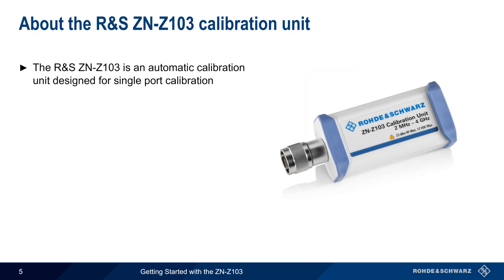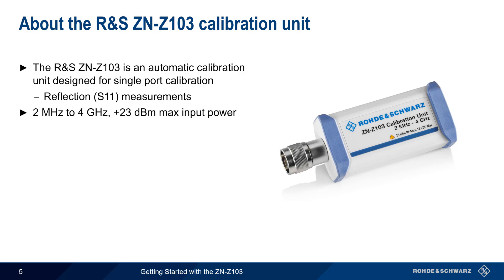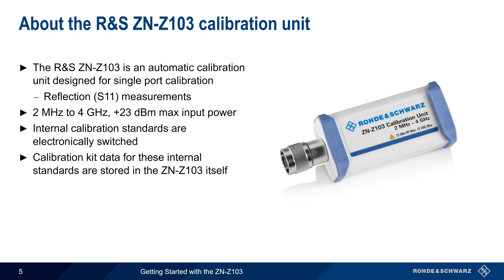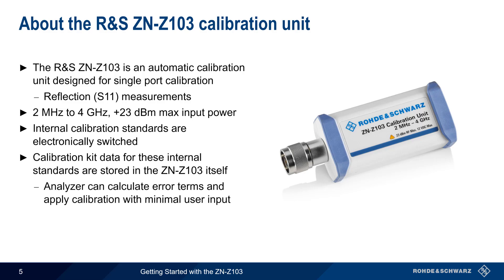The Rohde & Schwarz ZN-Z103 is an automatic calibration unit designed for single-port calibration, that is when making reflection or S11 measurements. It covers a frequency range of 2 MHz to 4 GHz and has a maximum input power of +23 dBm. Its internal calibration standards are electronically switched, which helps to reduce wear and maintain accuracy. Like most other Auto-Cal units, the calibration kit data is stored within the ZN-Z103 itself, meaning the attached analyzer can calculate error terms and apply calibration with minimal user interaction.